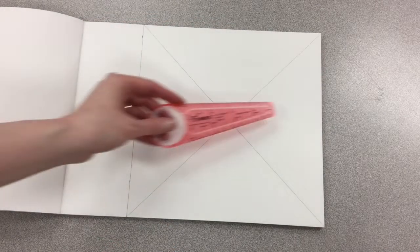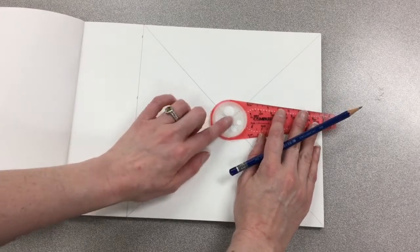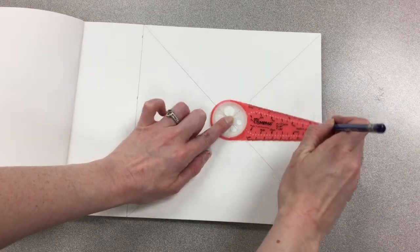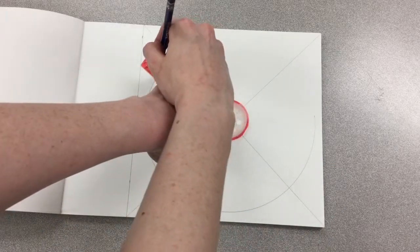Now that I've found the center of my paper, I'm going to take a compass and place the brass ring right in the middle. I'm going to choose one of the dots that's very close to the edge of my box, and I'm going to draw a circle.